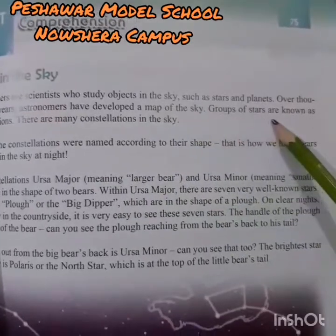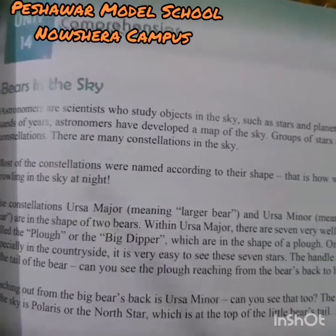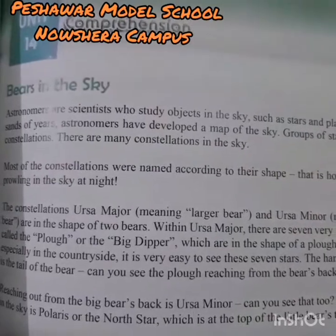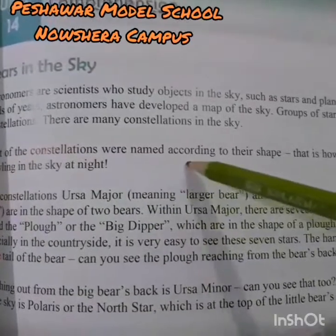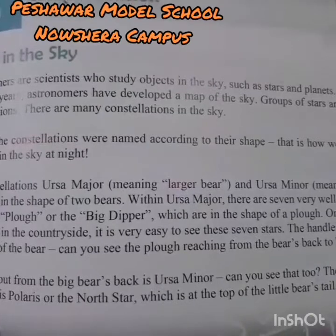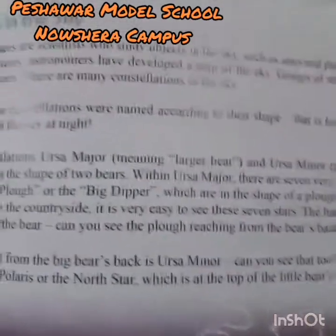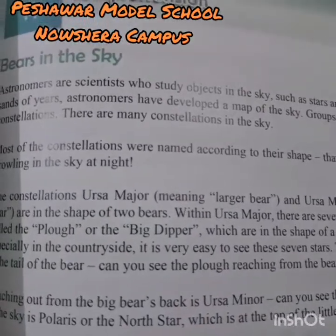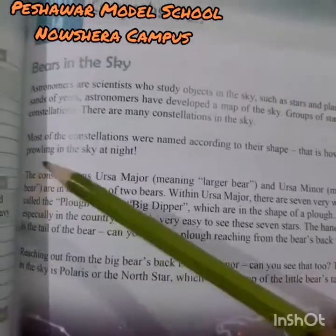Over thousands of years, astronomers have developed a map of the sky. Groups of stars are known as constellations. There are many constellations in the sky. Most constellations were named according to their shapes — that is how astronomers grouped stars into different shapes. That is how we have bears prowling in the sky at night — it looks like a bear's shape.